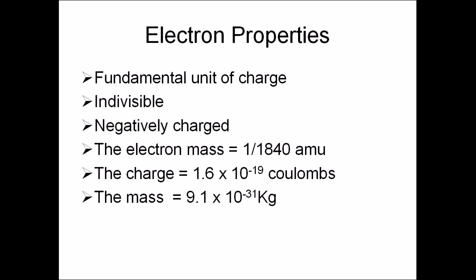These are some of the properties of electrons. Electrons are indivisible, negatively charged, have a mass of 1 over 1840 atomic mass units which is 9.1 by 10 to the minus 31 kilograms. Their charge is 1.6 by 10 to the minus 19 coulombs.